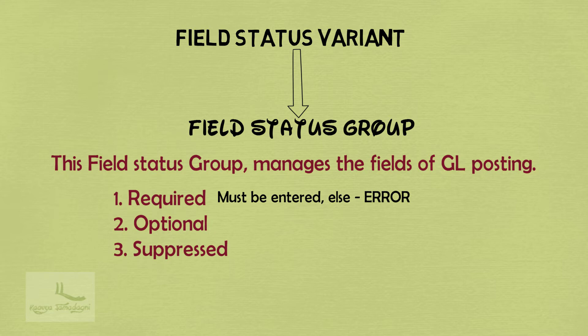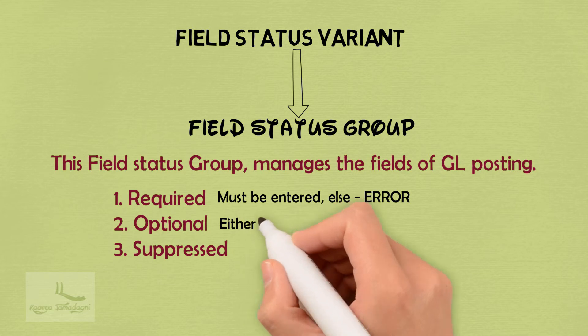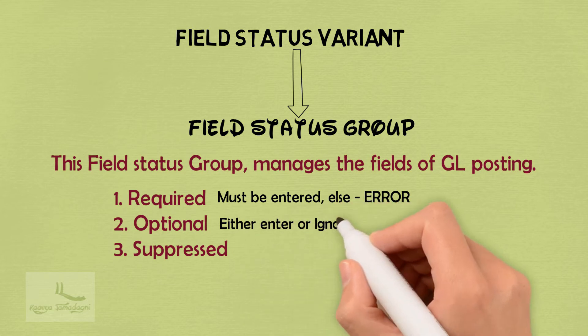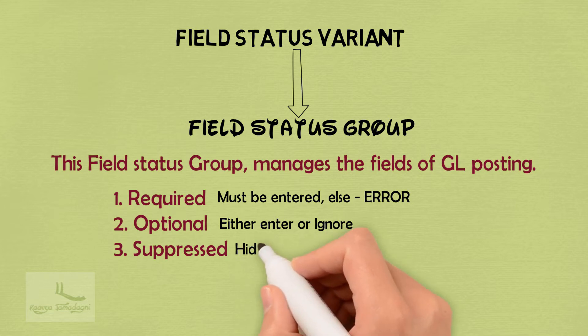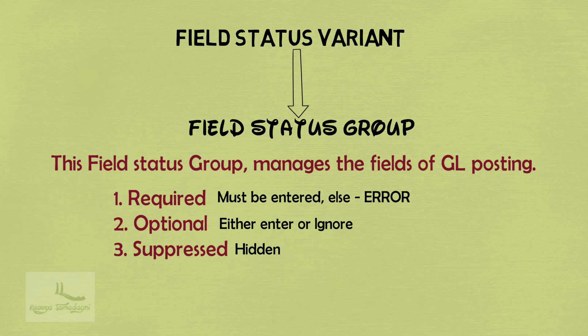If I have marked any field as optional, then the field value is optional to enter for the end user during the GL posting. That means the user can either give the input or just skip giving the field. And if I have marked the field as suppressed, then the particular field will be suppressed — it will not be visible at all.